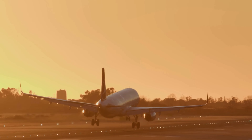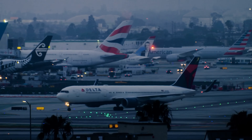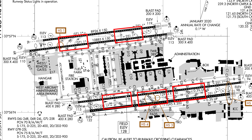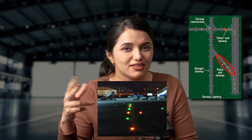Runway threshold identification lights are rotating flashing white lights on the sides of the threshold, helping identify the location of the threshold. After landing, when you have to exit the runway onto a taxiway, there is a rapid exit taxiway, which allows the pilot to exit at a certain speed without completely stopping first. Rapid exit taxiway lights are alternating yellow and green in color.